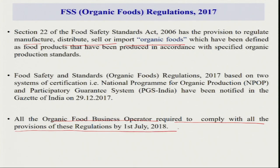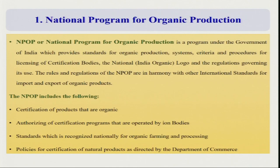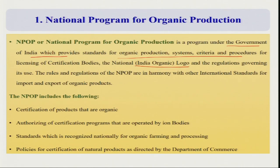The National Programme for Organic Production — NPOP — is one of the most important programs that has played a major role in making organic farming popular in India and enhancing total organic area by more than 40 fold over the last 18 years. It is a program of the Government of India which provides standards for organic production systems, criteria, the India organic logo, and different rules and regulations. These have been documented and widely circulated, and the NPOP has played a very major role.